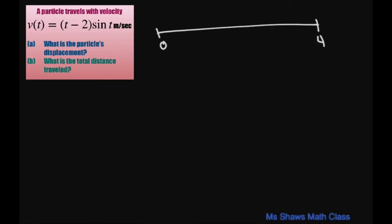And we know that it's stopped where v of t equals 0. So that's going to be where t is 2 and where t is pi, because I'm setting t minus 2 equal to 0 and sine of t equals 0 between 0 and 4.